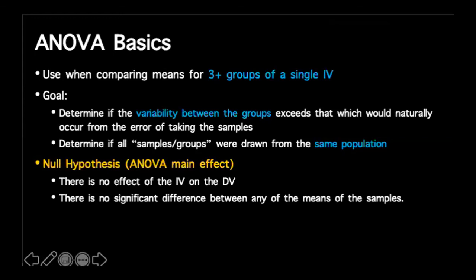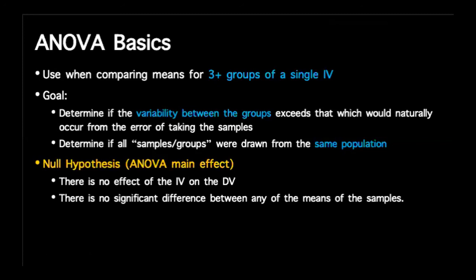Our null hypothesis is very similar to a t-test: we're asking whether there is an effect of an independent variable on a dependent variable given multiple manipulations. The null always says there is no effect — in this case, no significant difference between any of the group means, or that the means of each sample are relatively equal.